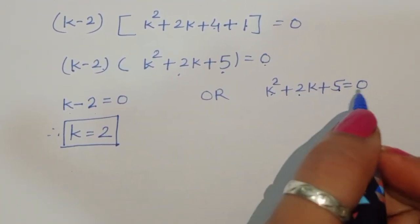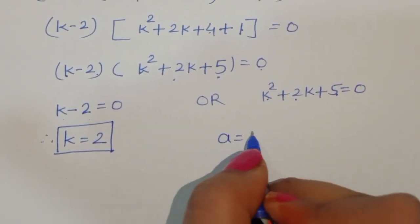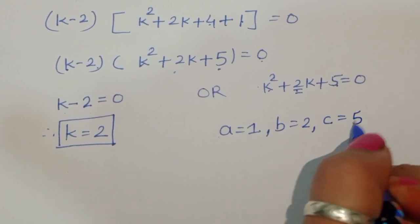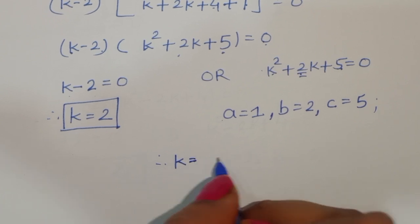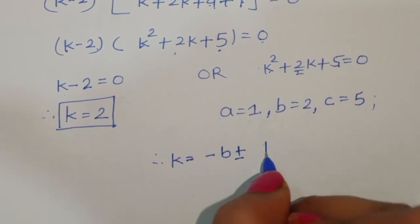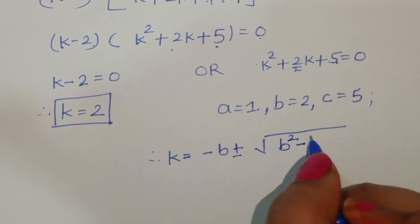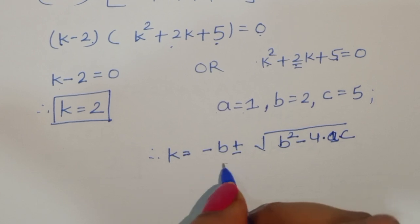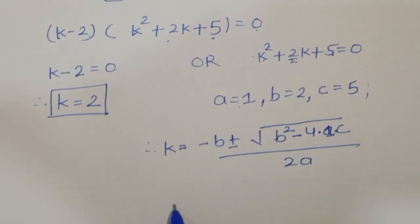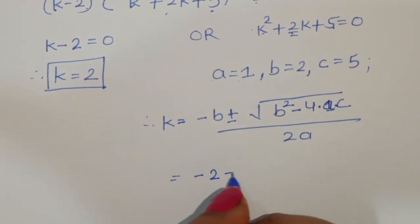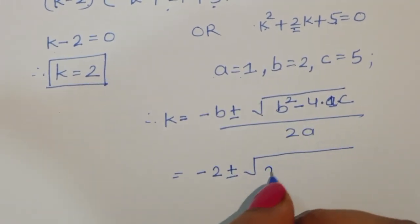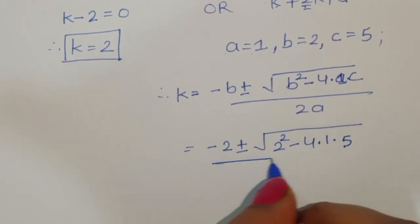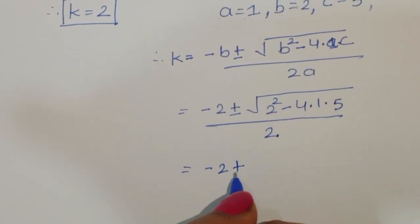For the second equation k squared plus 2k plus 5 equals 0, the coefficients are: a equals 1, b equals 2, c equals 5. Applying the quadratic formula: k equals minus b plus or minus square root of (b squared minus 4ac) divided by 2a. So k equals minus 2 plus or minus square root of (4 minus 20) divided by 2.